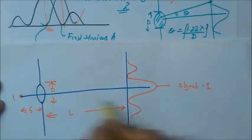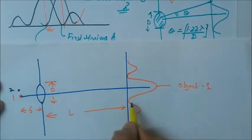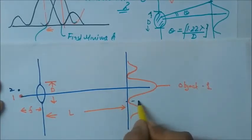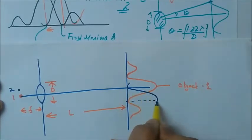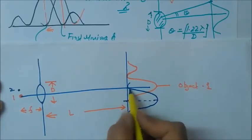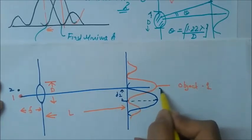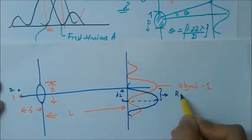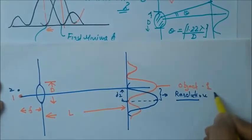Let there be another object 2 here. For resolution we know that the maxima of the second object should be at the first minima of the first object. Let this distance be D2, which is the Rayleigh resolution criteria.